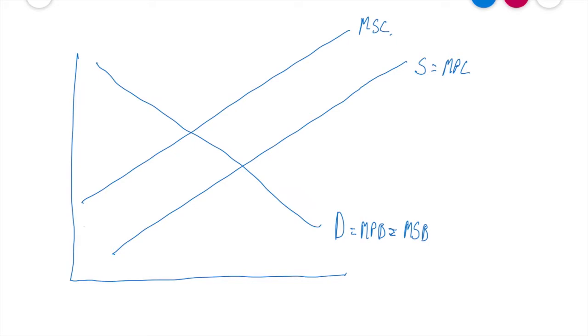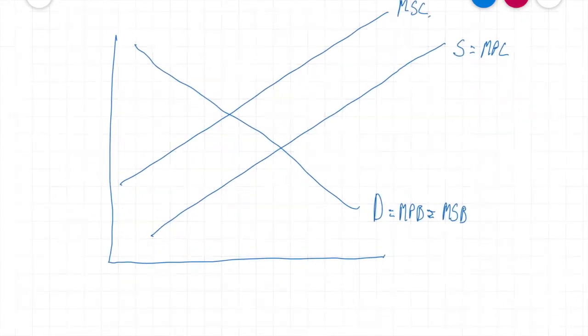So now let's look across to a slightly different diagram. In this diagram here, what we're looking at is the idea of a negative production externality.